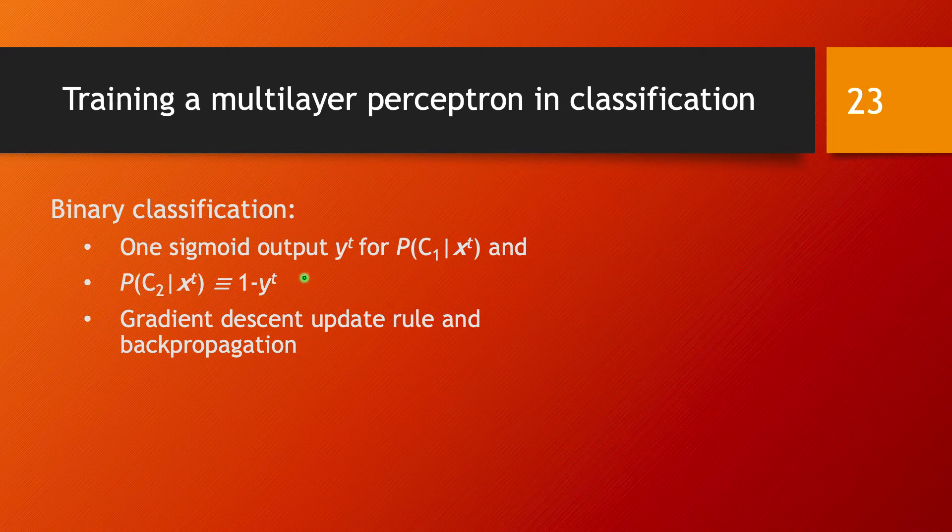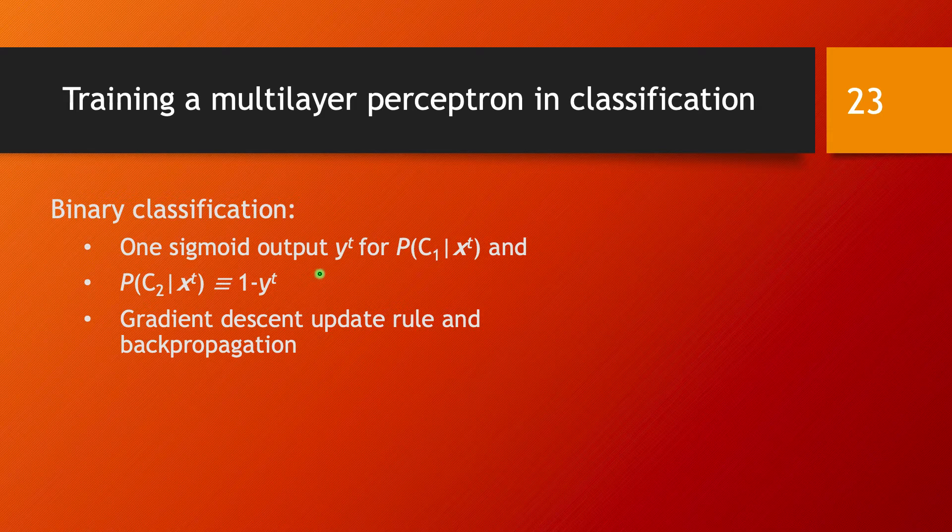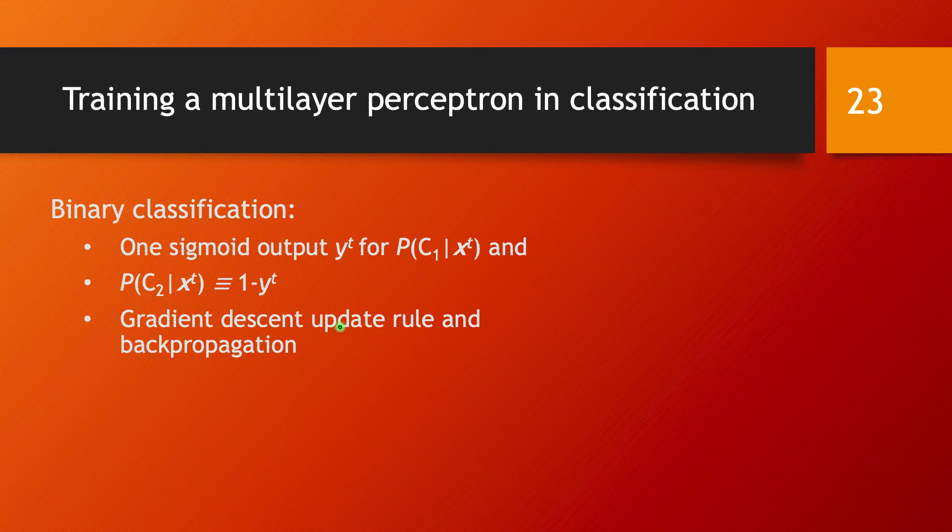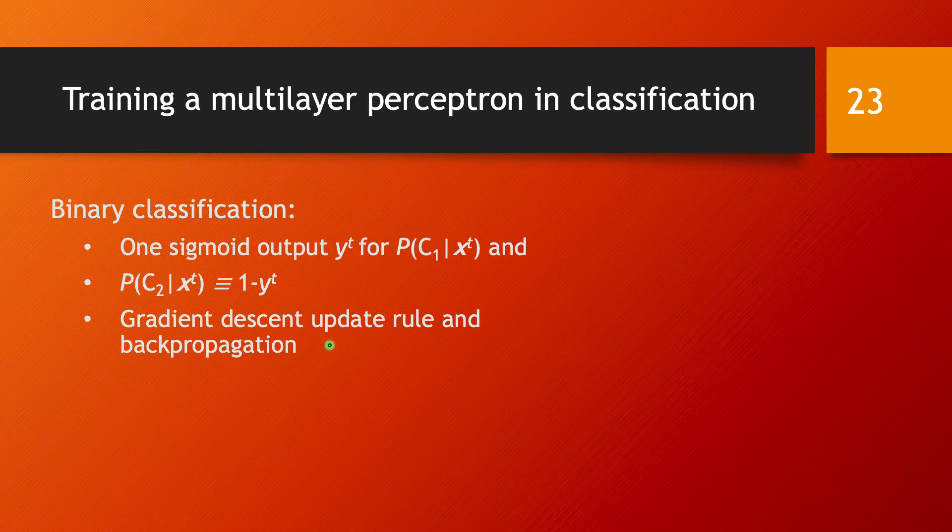One single neuron in the output layer and a sigmoid output for that output neuron. And then in terms of training, we are going to use the gradient descent update rule and backpropagation of the error.